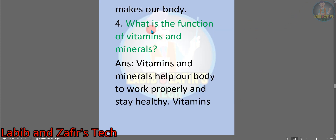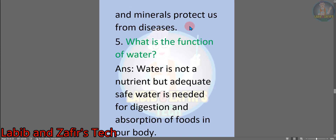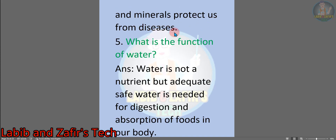Number 4: what is the function of vitamins and minerals? Answer: vitamins and minerals help our body to work properly and stay healthy. Vitamins and minerals protect us from diseases. Number 5: what is the function of water? Answer: water is not a nutrient, but safe water is needed for digestion and absorption of foods in our body.